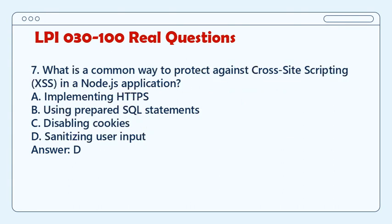Question 7. What is a common way to protect against cross-site scripting (XSS) in a Node.js application? A. Implementing HTTPS. B. Using prepared SQL statements. C. Disabling cookies. D. Sanitizing user input. Answer: D.